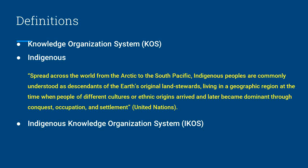Before we can begin to discuss Indigenous Knowledge Systems, we must first look at the word Indigenous. Most dictionaries, like the OED, define Indigenous as of, relating to, or intended for the Native inhabitants. The United Nations offers a more contextual understanding of the term Indigenous. Spread across the world from the Arctic to the South Pacific, Indigenous peoples are commonly understood as descendants of the Earth's original land stewards living in a geographic region at a time when people of different cultures or ethnic origins arrived and later became dominant through conquest, occupation, and settlement.